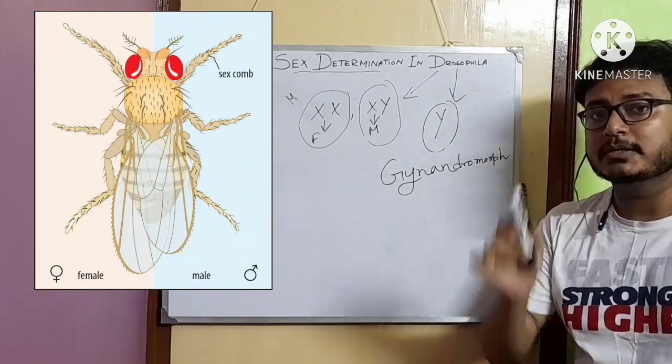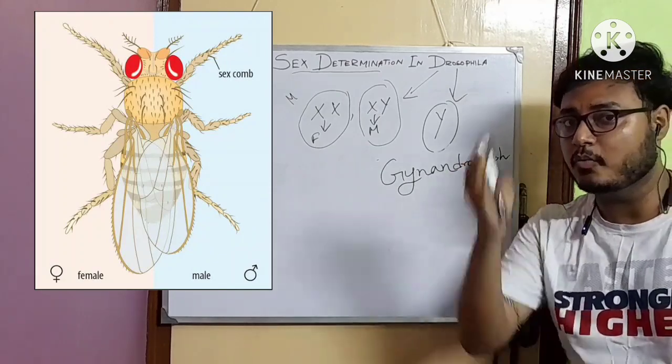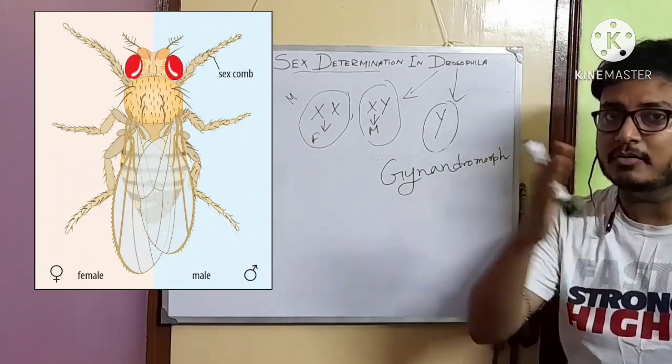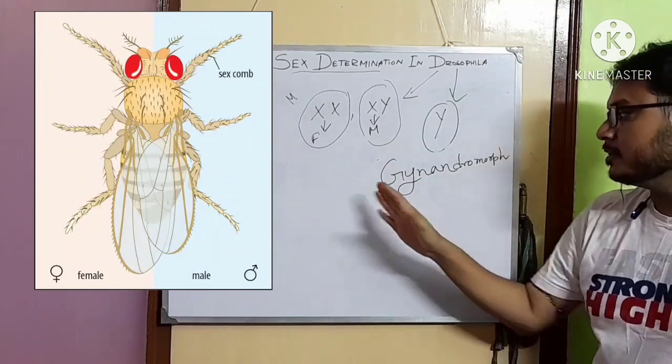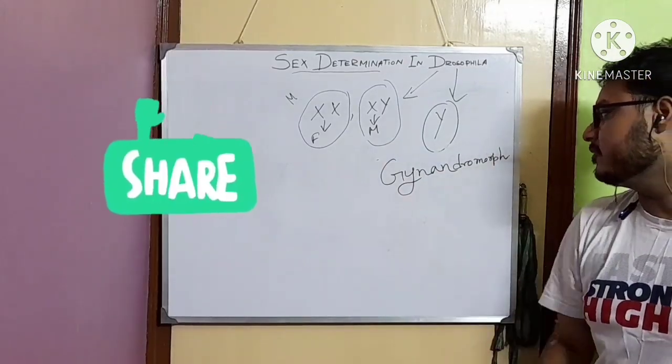Gynandromorphs can have bilateral asymmetry, one part male, one part female, or it can be a mosaic. Why? Why do these Gynandromorphs occur?